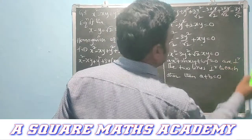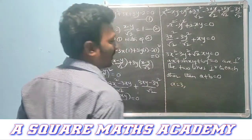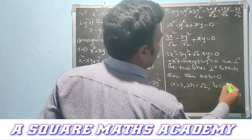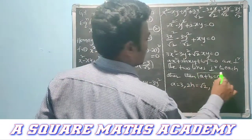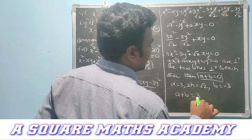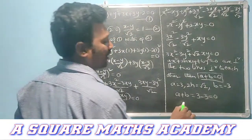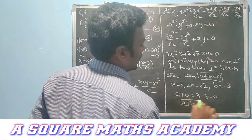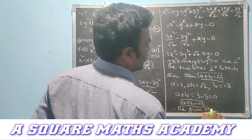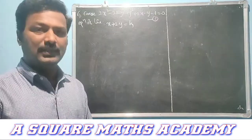Comparing with our equation: a = 3, 2h = √2, and b = −3. Checking the condition: a + b = 3 + (−3) = 0. Since a + b = 0, the given lines are perpendicular to each other. This completes the first question.